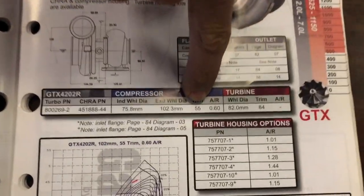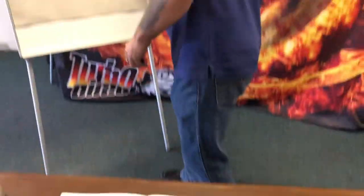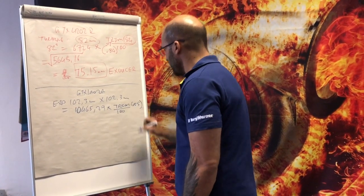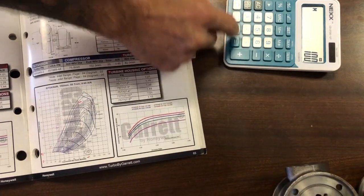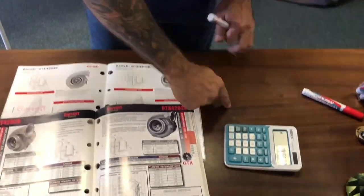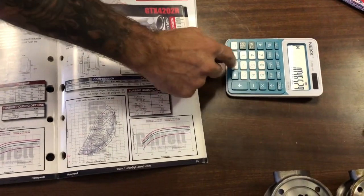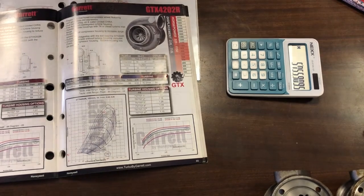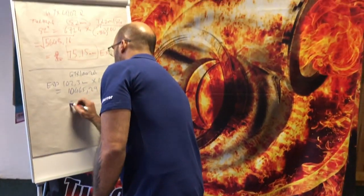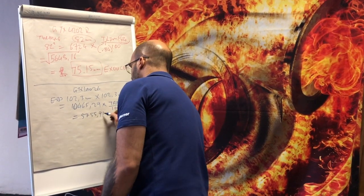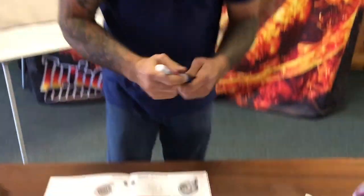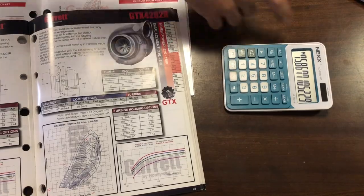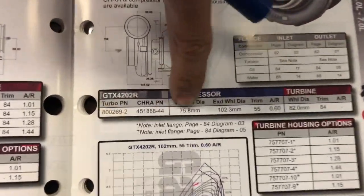The trim on the compressor is 55, so divided by 100 that's 0.55. Memory recall the 10,465.29 value times 0.55 equals 5755.91. The square root of 5755.91 gives us 75.86mm - call it 75.8mm inducer on the compressor side.